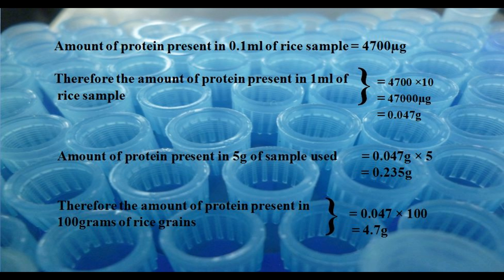From this graph, we can derive that 4700 micrograms of protein is present in the 0.1ml of rice sample. We can further derive that 0.235g of protein is present in the 5g of sample we used. Therefore, about 4.7g of protein is present in the 100g of rice grains.